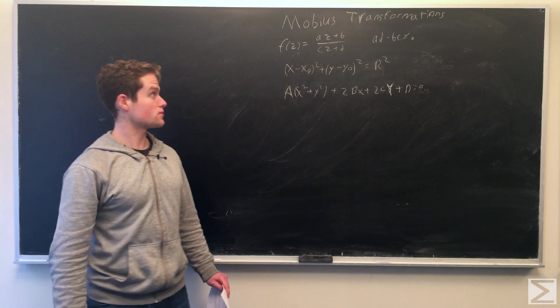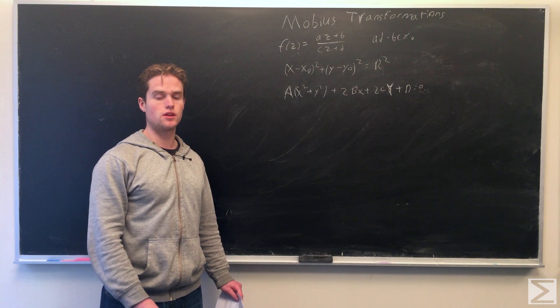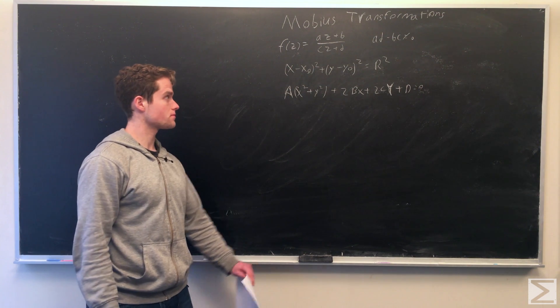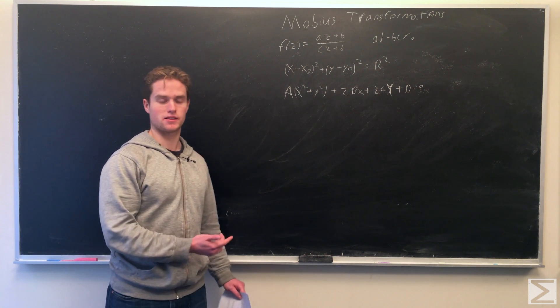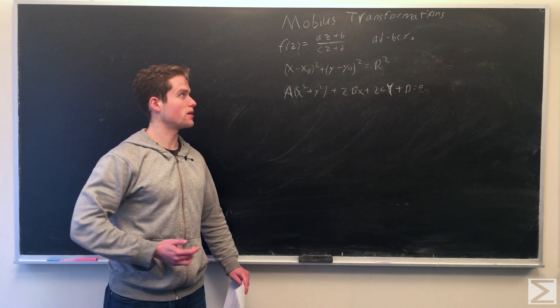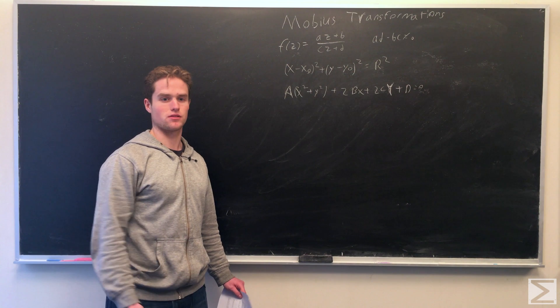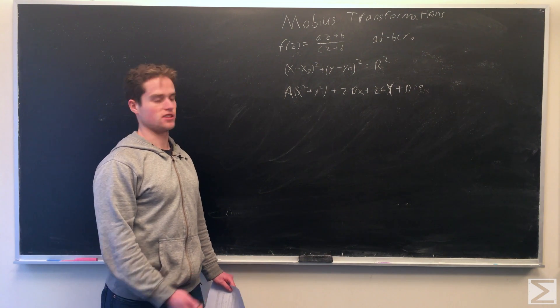So we're going to show that the Mobius transformation takes lines and circles to lines and circles. So remember, any circle on the plane can be written in the form x minus x0 squared plus y minus y0 squared equals r squared. The center of the circle being x0, y0, radius being r.